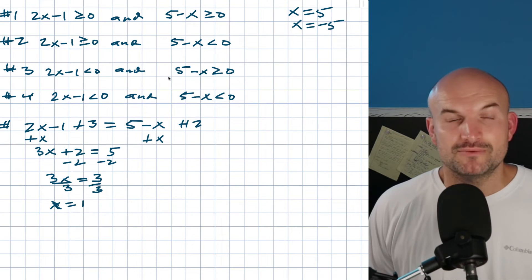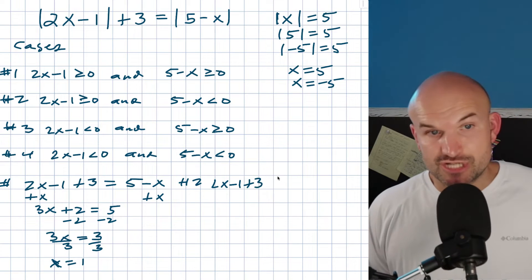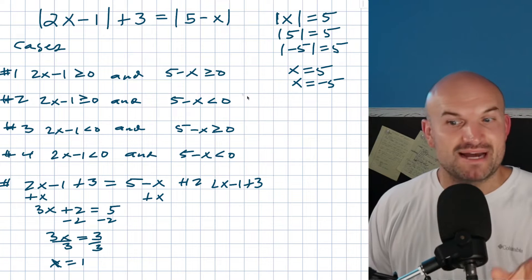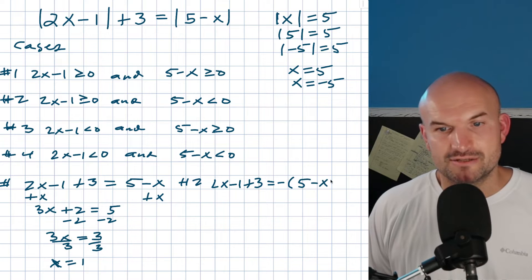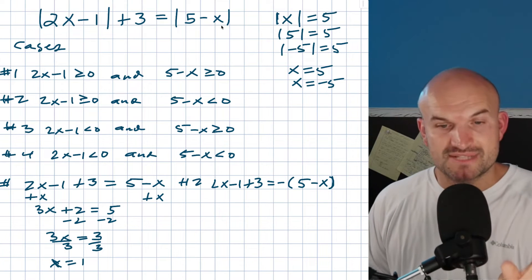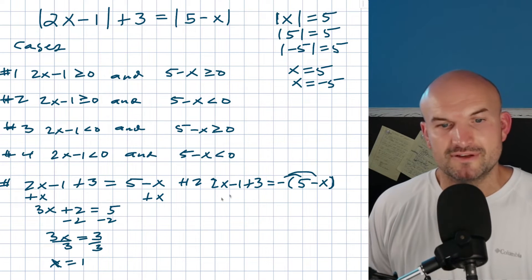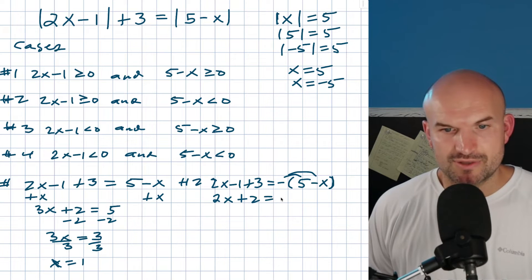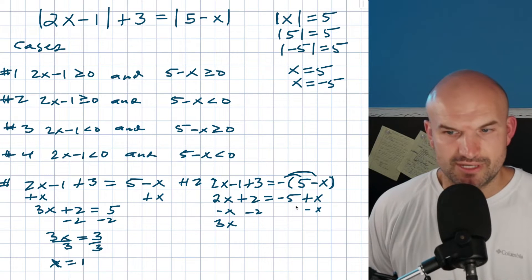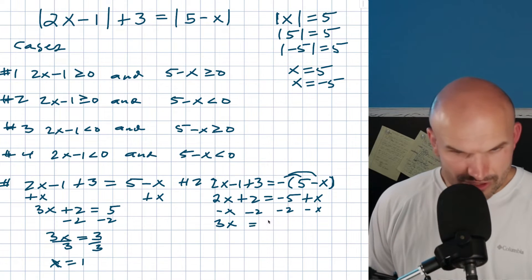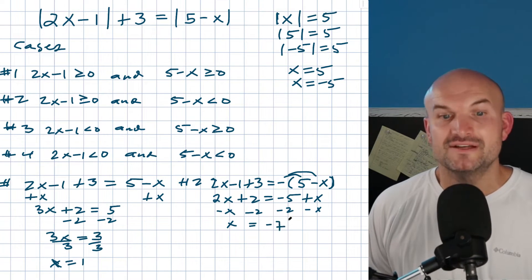Case number two: 2x minus 1 is positive so we write 2x minus 1 plus 3. However, we now negate the 5 minus x, giving us the negative version of that second argument. Distributing and combining, we get 2x plus 2 equals negative 5 plus x. Subtracting x and subtracting 2 gives x equals negative 7.